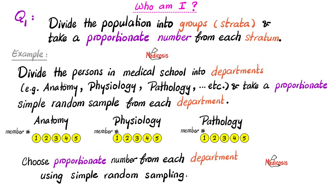We're going to divide the population into groups known as strata, and then take a proportionate number from each stratum. For example, we divide persons in medical school into departments: the anatomy department — made of people who hate themselves — the physiology department — people who wanted to become engineers but sucked at calculus — and the pathology department. Then we take a proportionate simple random sample from each department.